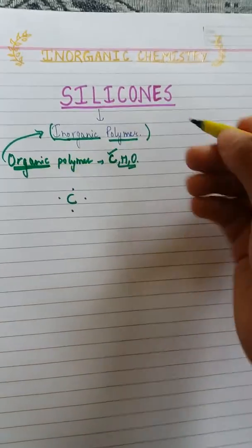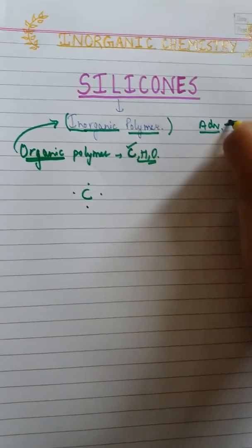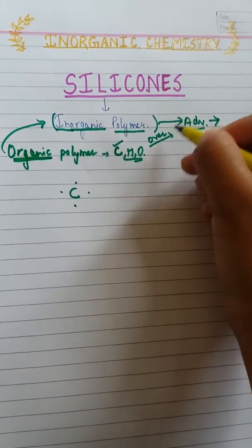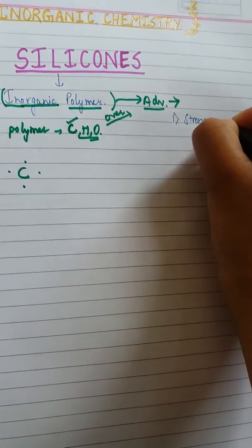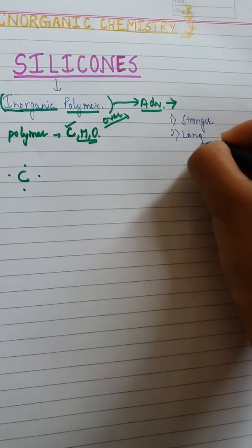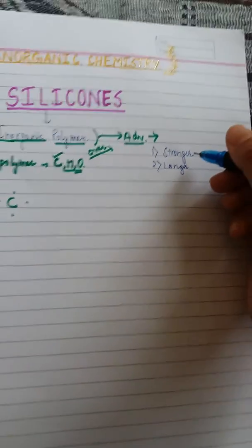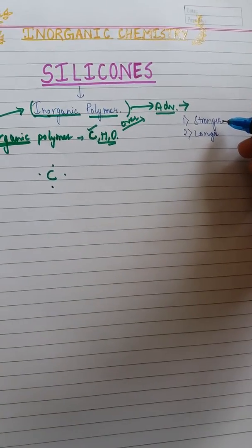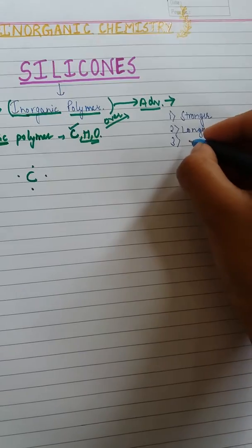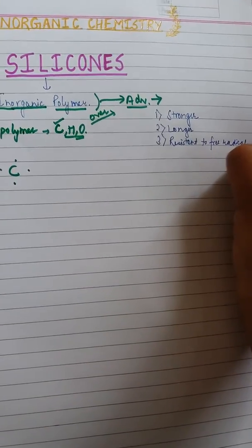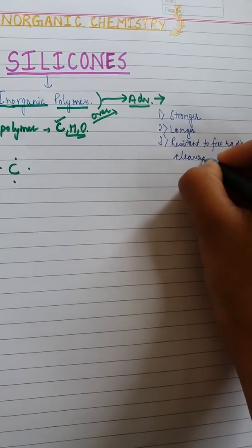A few advantages of inorganic polymers over organic polymers: inorganic polymers are stronger and thermally stable even at higher temperatures. Inorganic polymers are also resistant to free radical cleavage reactions.